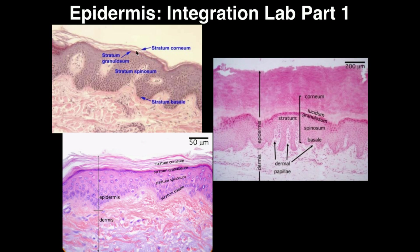If you go deep to the stratum corneum, there's a layer that's very thin but stains probably the darkest of any region. This is called the stratum granulosum. You can see it much more effectively in the bottom picture. Notice not only does it stain a lot darker than the stratum corneum or any other layer, but it's also very thin, and it's just deep to the stratum corneum.